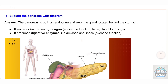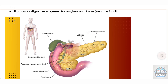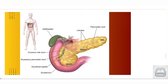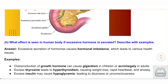G) Explain the pancreas with diagram. Answer: The pancreas is both an endocrine and exocrine gland located behind the stomach. It secretes insulin and glucagon (endocrine function) to regulate blood sugar, and produces digestive enzymes like amylase and lipase (exocrine function).